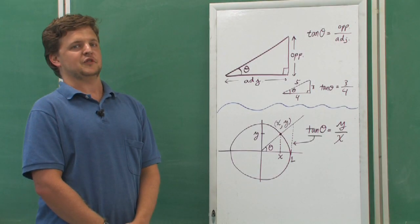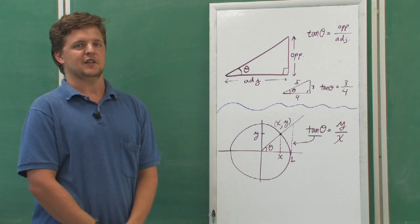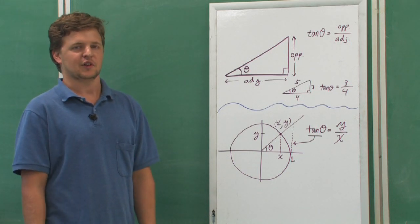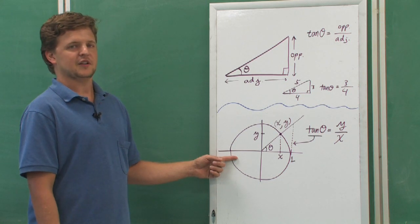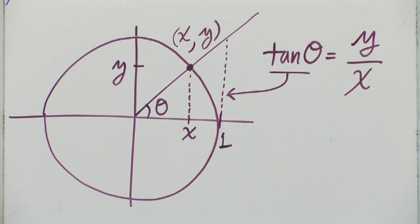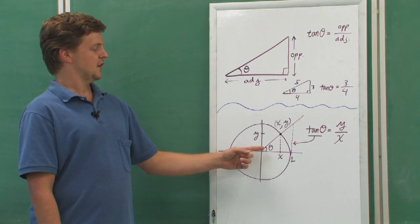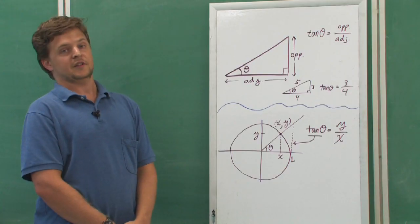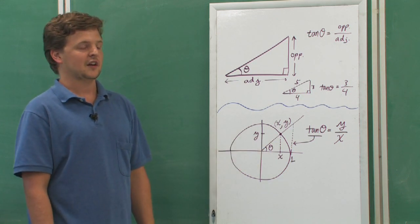For an angle of general size, anywhere from negative infinity to infinity, we can describe tangent of theta by looking at the unit circle. This circle has a radius 1, so it crosses the x and y axes at 1. Here's the angle theta drawn on the unit circle, and you can tell by looking at this angle theta, it's the same as in a picture of a right triangle.